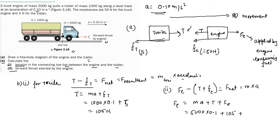The frictional force on the engine is 50 N. Solving: Fe = 500 + 105 + 50 = 655 N.